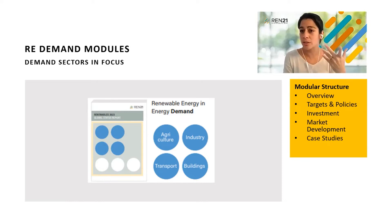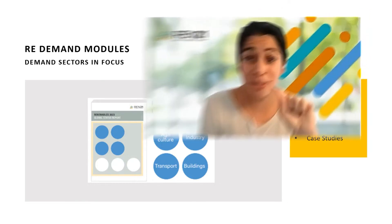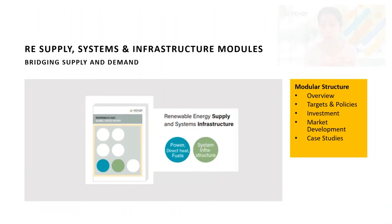We will be covering in a first module: agriculture, industry, transport, and buildings. Inside each of those modules, it will be structured in a similar way — we will have the overview, targets and policies, investments, market developments, and case studies, as shown in the yellow box on the right side, similar to what we've seen in the past Global Status Report.